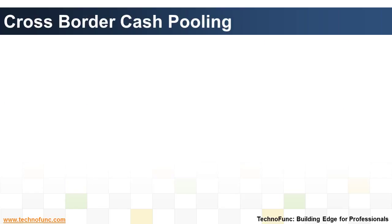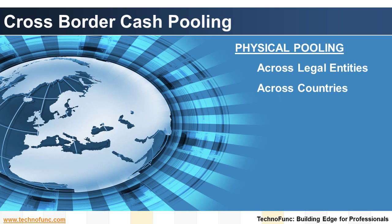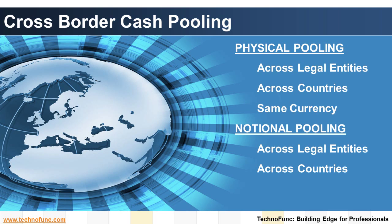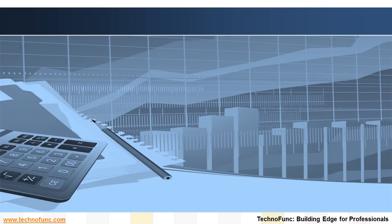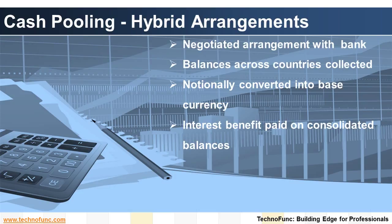Cross-border cash pooling: physical pooling can be used across multiple legal entities located in the same or different countries but in the same currency. The funds movement between the participating entities is accounted for via intercompany loans. However, notional cash pooling can also be implemented across multiple currencies. Hybrid arrangements can be entered with the bank with an objective of interest optimization, where a company may have accounts in an excess cash position across various currencies and countries with a single bank.